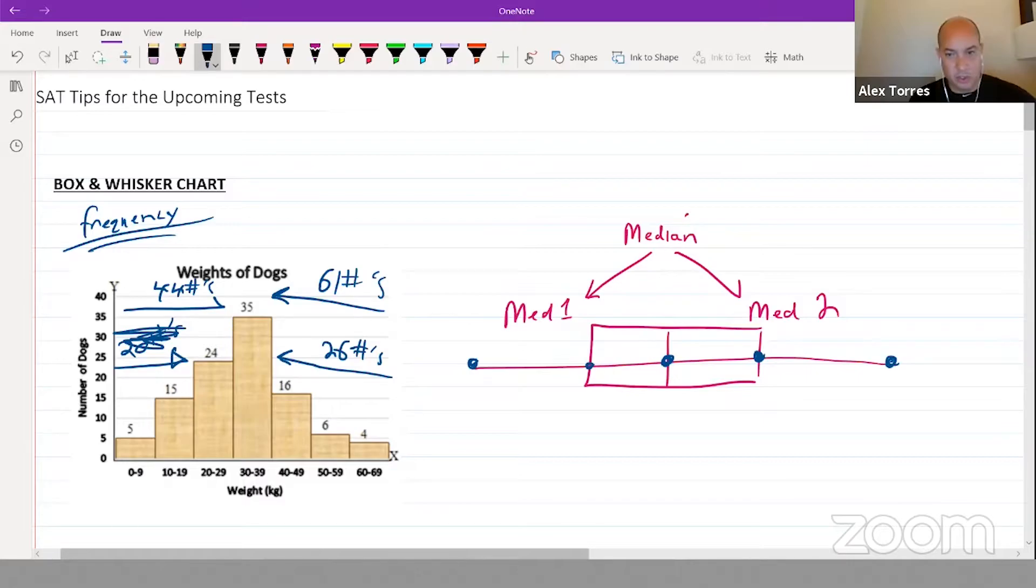So for this particular group, the median has to be one of the numbers within this bar. Because when we're looking for where the middle number would lie, because you have 44 on the left and 61 on the right, I know that the actual middle number is somewhere right in here. For the purpose of this discussion, let's go ahead and pretend instead of zero to nine, 10 to 19, and so on.